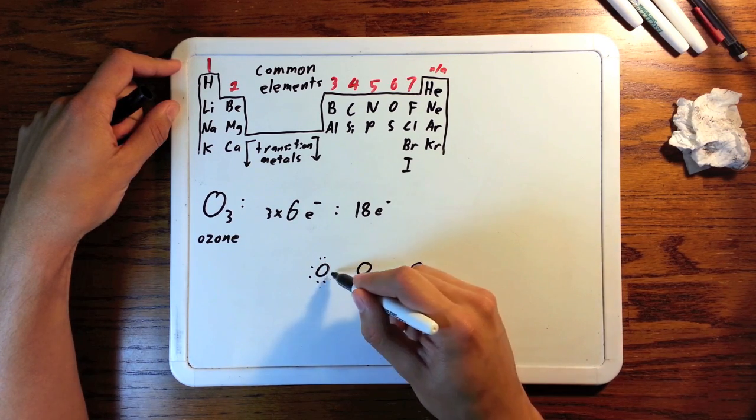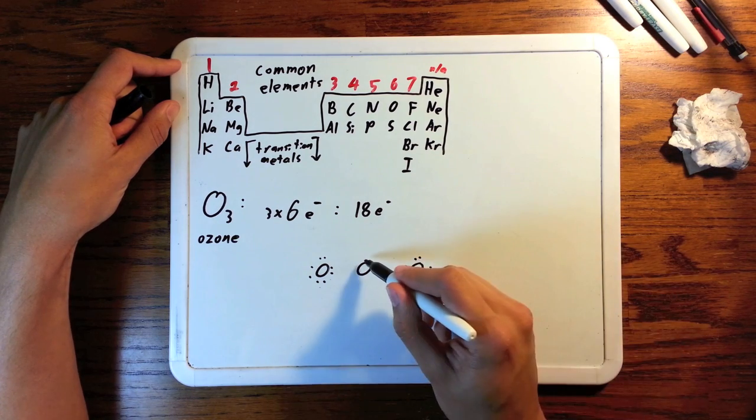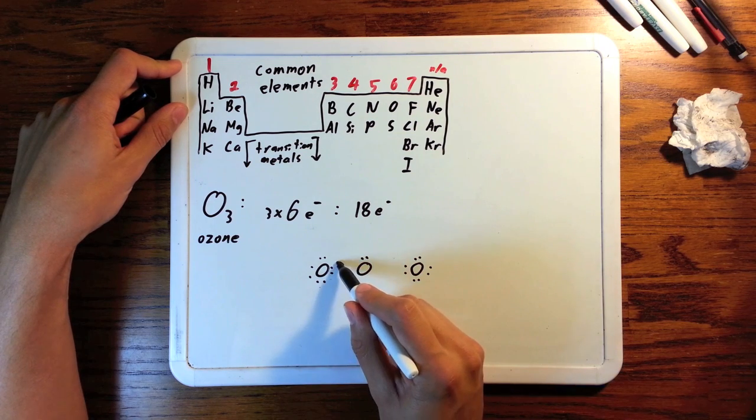First, we'll fill the outer atoms octets with our electrons. This time, we're going to have some left over. So, we put the remainder in the center, and then fill the center's octet with bonds.